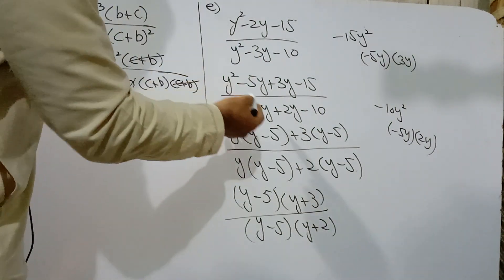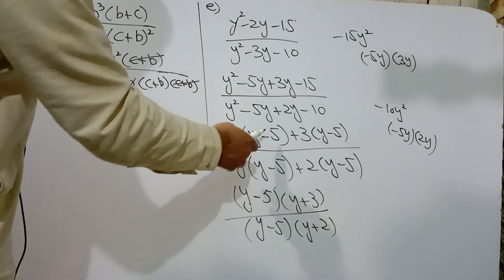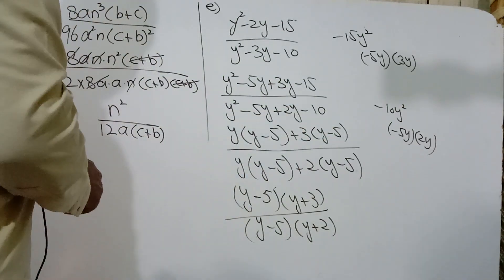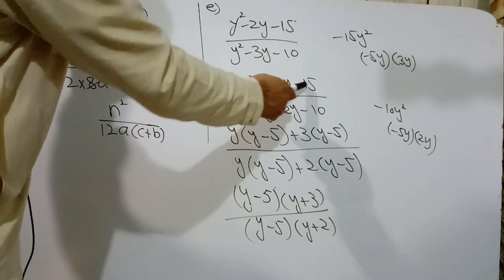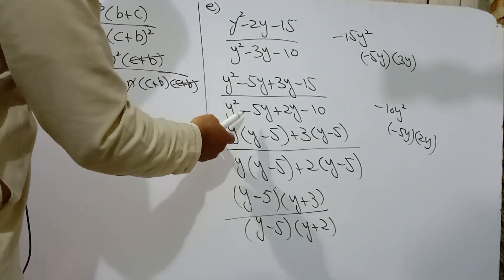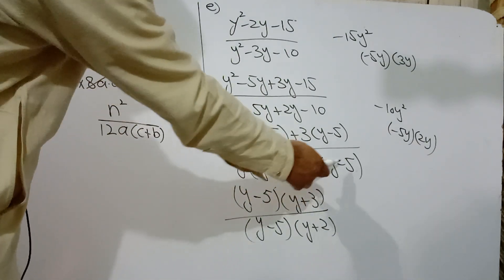Now make a factor. First two terms, y common, y(y-5) + 3. 3 common, y-5. We mean first two terms y common and other two terms 3 common. Similarly denominator, y also y common, y-5. 2 common, y-5.